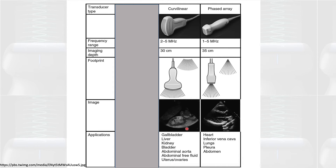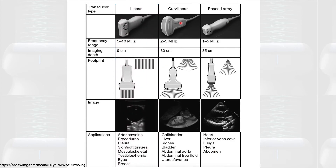The curvilinear probe is used to examine the gallbladder, liver, kidney, bladder, abdominal aorta, ascites or free fluid, uterus, and ovaries. You can also use the cardiac probe for these examinations. The cardiac probe is mainly used for the heart and IVC, examining the lungs especially at the bases, and pleural examination. These three probes are the main ones used in internal medicine.